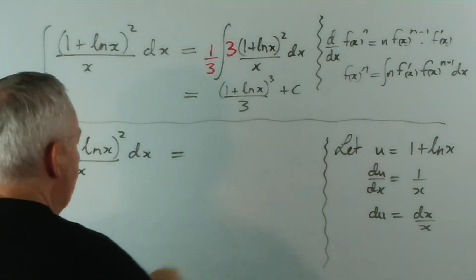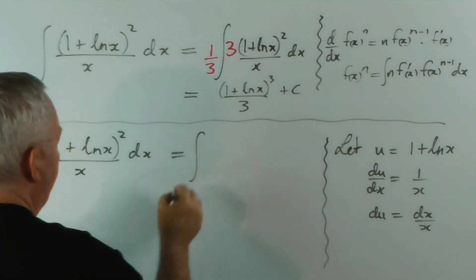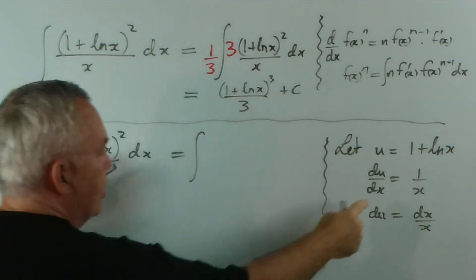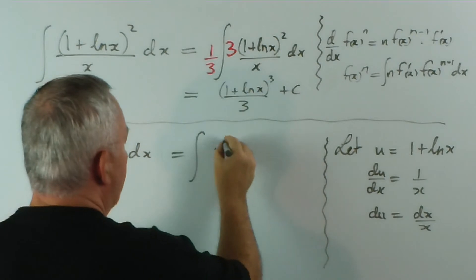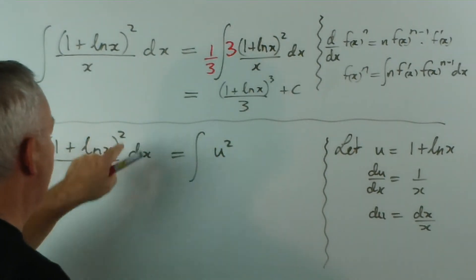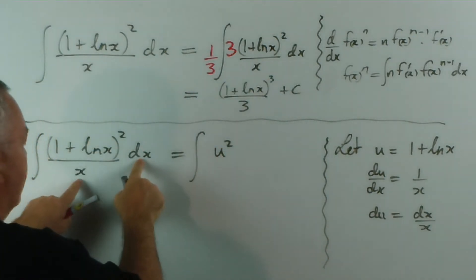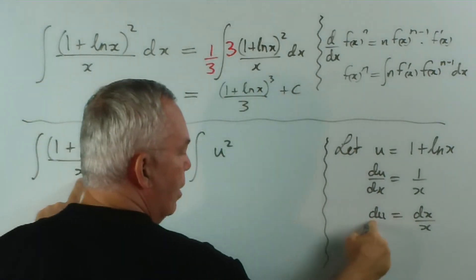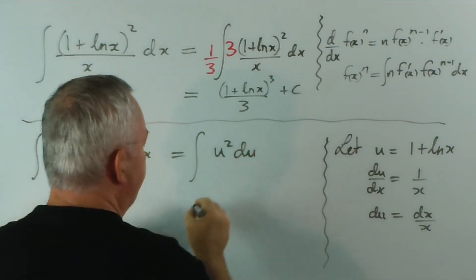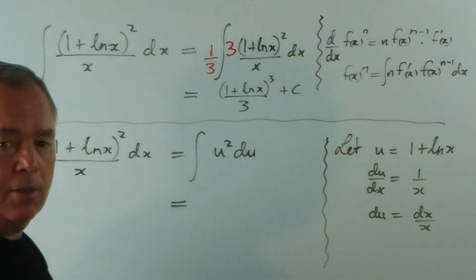Now, using that information, we get this. 1 plus log x is worth u, so we have u squared on the top. That's u squared. The dx over x, I can replace with a du. That's a much nicer looking integral.